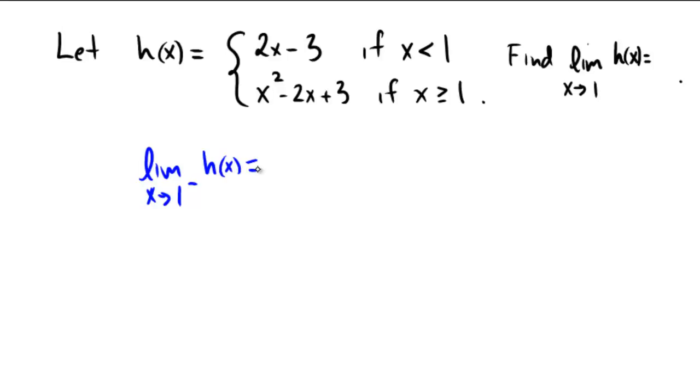And that would mean that if we were less than 1, we would be following the top rule. We'd be approaching from the left. So in the top rule, we get 2 times 1 minus 3, which is 2 minus 3, and that one is negative 1.